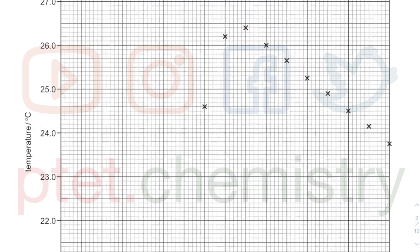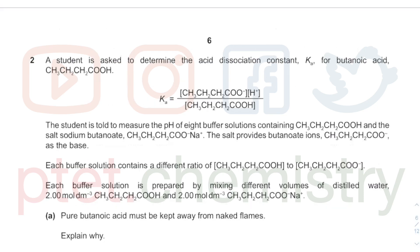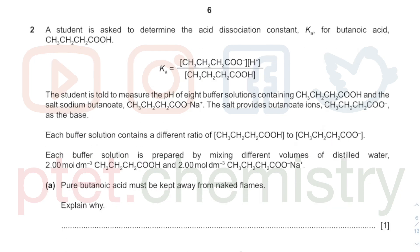Question two is about Ka — ionic equilibria. I told you: do not try to predict what will come out because you will be disappointed. Whatever comes up, you still need to do it. Every single topic in chemistry can come out because chemistry is experimental. Unlike physics, which is sometimes theoretical, in chemistry every topic is fair game — maybe except atomic structure.